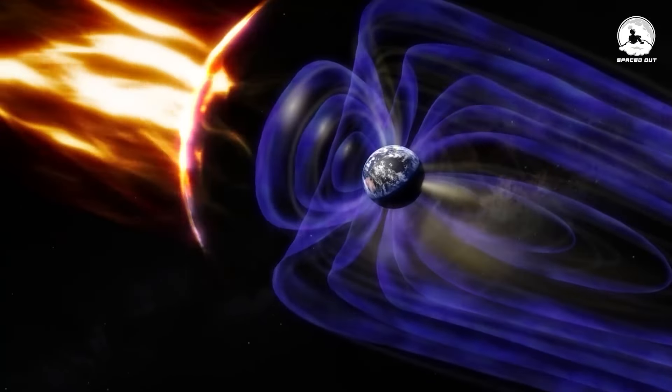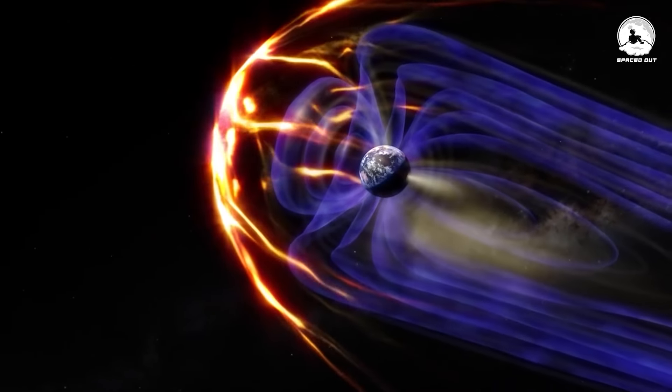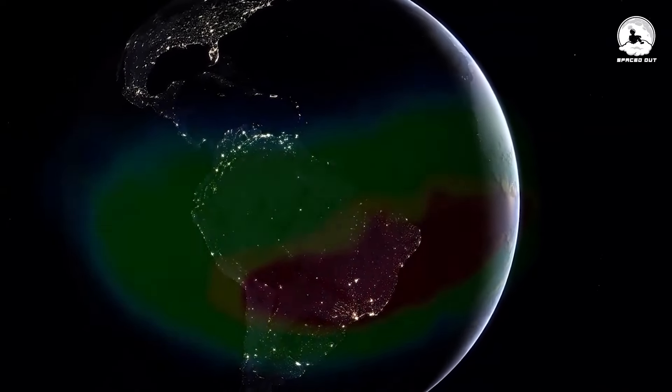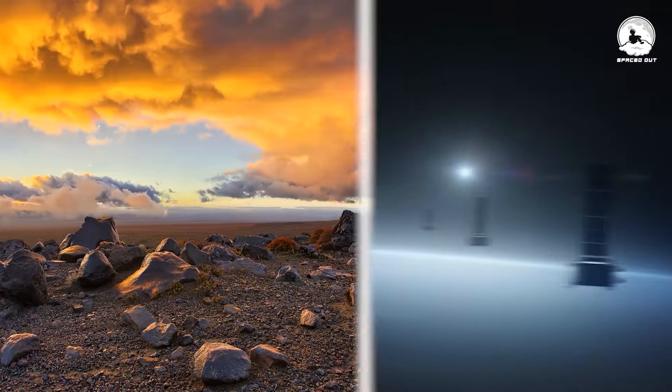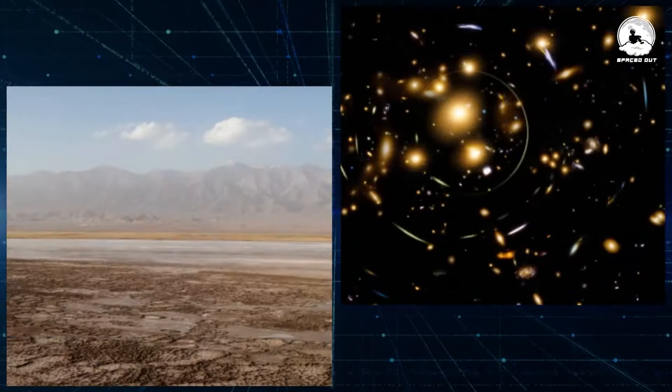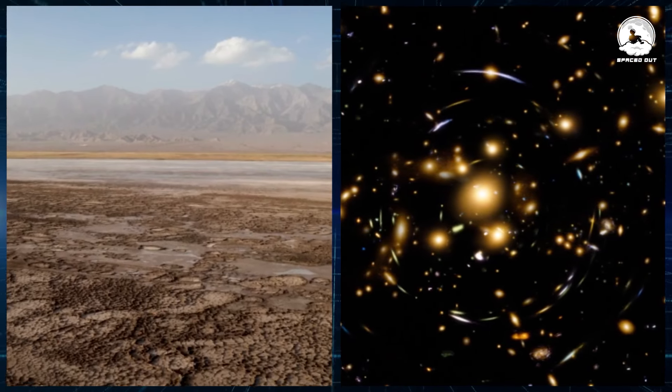This increased exposure can significantly impact Earth's atmosphere, climate, and technological systems like satellites and power grids. The potential consequences of a geomagnetic reversal are broad, affecting everything from the air we breathe to familiar weather patterns.